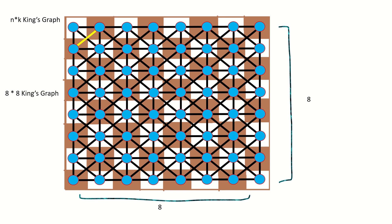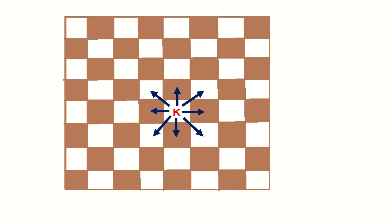Every connection between two vertices in a king's graph represents a legal move of a king between the squares represented by those two vertices. For those unfamiliar with chess, a king can move one square in any direction from its current square.